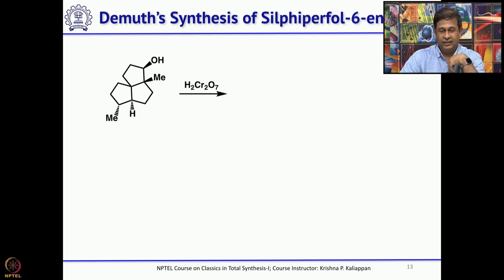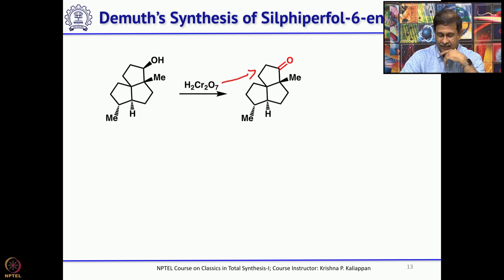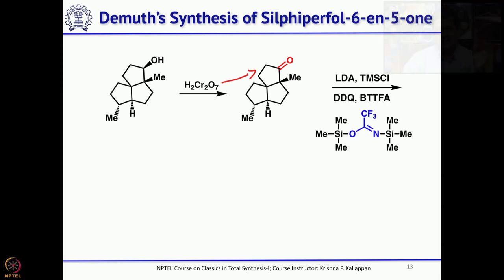Now the alcohol needs to be oxidized to a ketone, and then two methyl groups and a double bond must be introduced. Treatment with LDA and TMS chloride forms the corresponding enol-TMS. To introduce the double bond, DDQ and an exotic reagent — actually derived from trifluoroacetamide treated with trimethylsilyl chloride — is used. This reagent allows introduction of a double bond adjacent to the ketone.